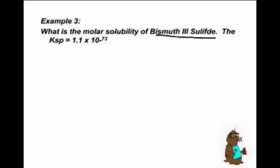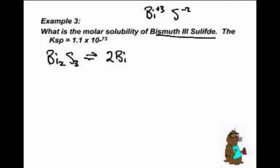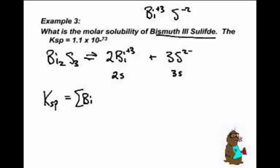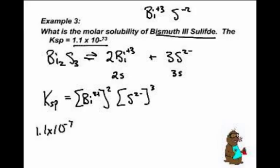One more example: bismuth(III) sulfide. Bismuth has a charge of +3 and sulfide is -2, so the formula is Bi₂S₃. It breaks apart into 2 Bi³⁺ plus 3 S²⁻. Using S for solubility, bismuth becomes 2S and sulfide becomes 3S. The Ksp expression equals [Bi³⁺]² times [S²⁻]³ — squared and cubed because of their coefficients. The Ksp value is 1.1 × 10⁻⁷³.